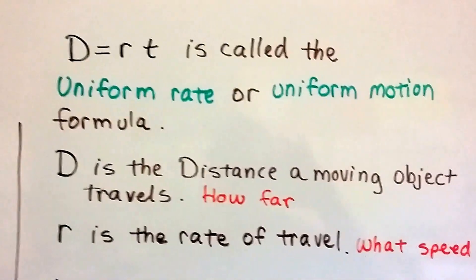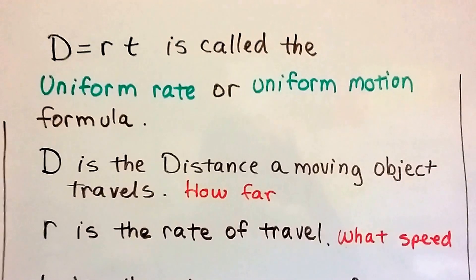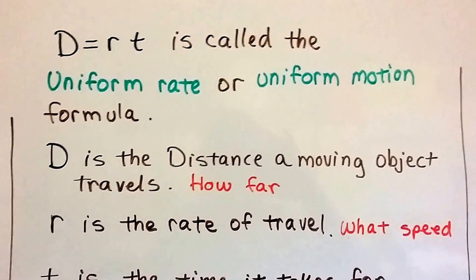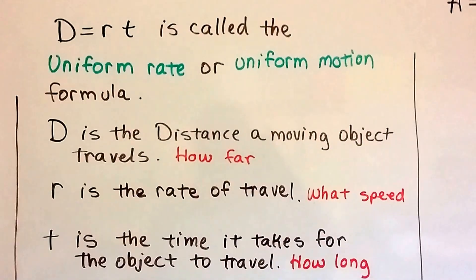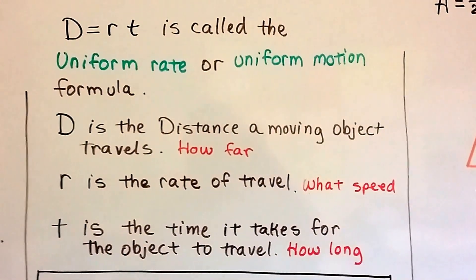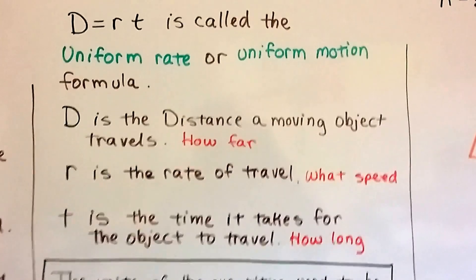D equals RT is called the uniform rate or uniform motion formula. D is the distance a moving object travels, that's how far. R is the rate of travel, that's what speed. And T is the time it takes for the object to travel, how long.